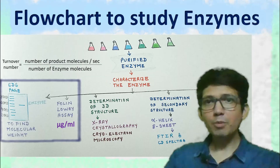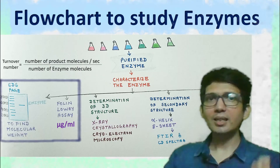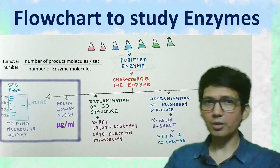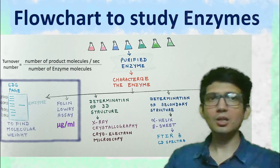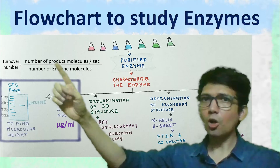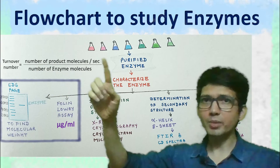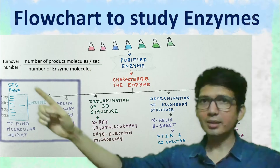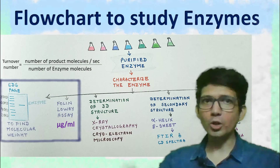If the number of enzyme molecules are calculated, then we can calculate the turnover number of the enzyme. This is because turnover number is the ratio of the total number of product molecules formed in one second divided by the total number of enzyme molecules.